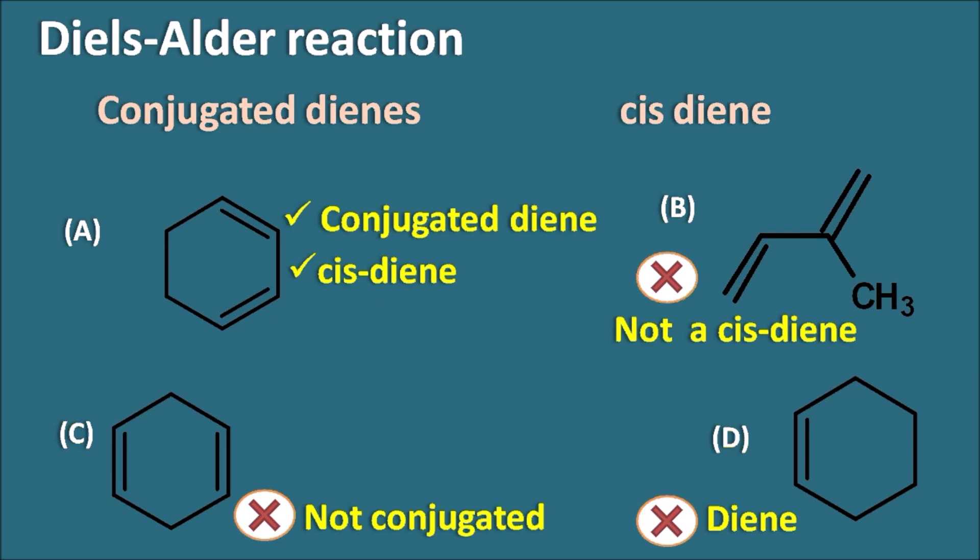Cis diene means the double bonds are on the same side, whereas trans diene has the double bonds on the opposite side. Option A is a cis diene and can readily undergo the Diels-Alder reaction because it is also a condensed diene — specifically a cyclohexadiene. In condensed dienes, the configuration is fixed by placing the double bonds in a cyclic form, so it cannot change to the trans configuration and mainly exists as cis. Therefore, option A is the correct answer.